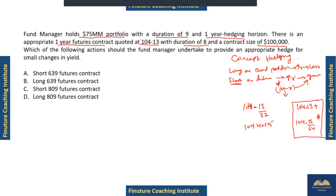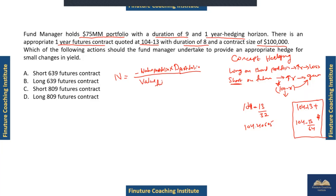That is the pricing convention for the hedging instrument — just additional information. Otherwise, the formula is: Number of contracts = (Value of Portfolio × Duration of Portfolio) divided by (Value of Futures × Duration of Futures). We'll just quickly plug in the numbers.